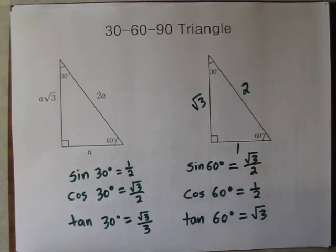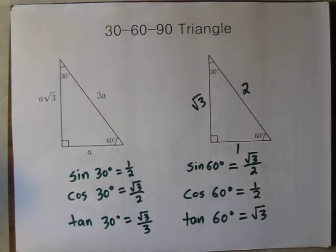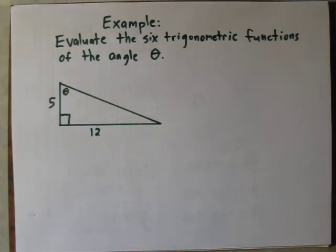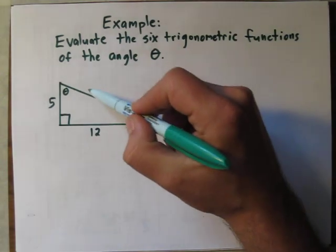You could find the reciprocals of all of these to evaluate the other three trigonometric functions. But not all the triangles we work with are special 45-45-90s or 30-60-90 triangles. Let's look at this example. Here we have to evaluate the six trigonometric functions of angle theta. We can see angle theta, and we only know the length of two sides: this side is 5, and this side is 12. We can use the Pythagorean theorem to figure out the length of the third side.